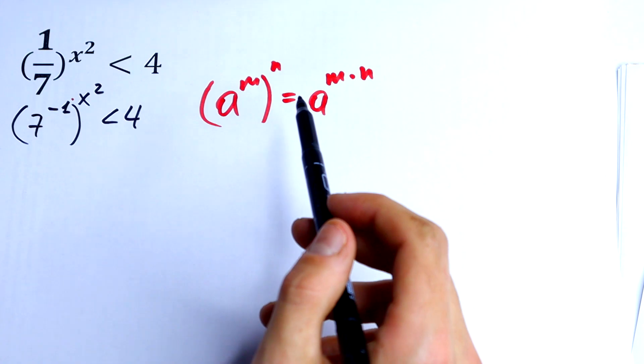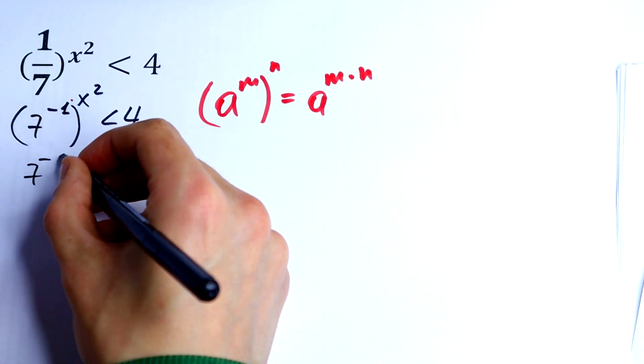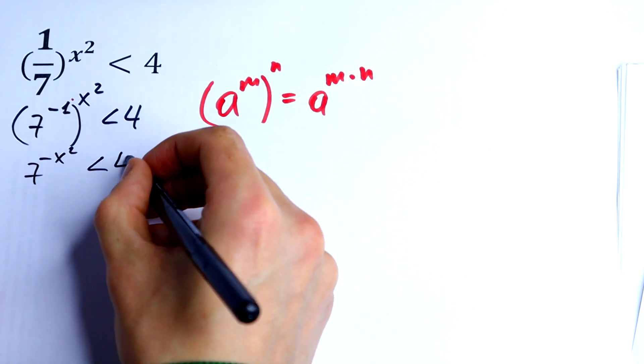So I will use this rule right here. So I will have 7 to the power minus x squared is less than 4.